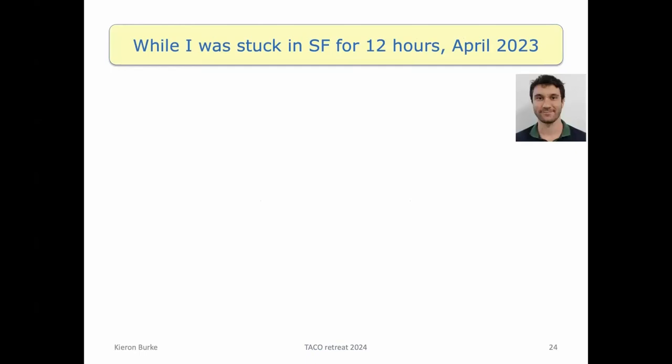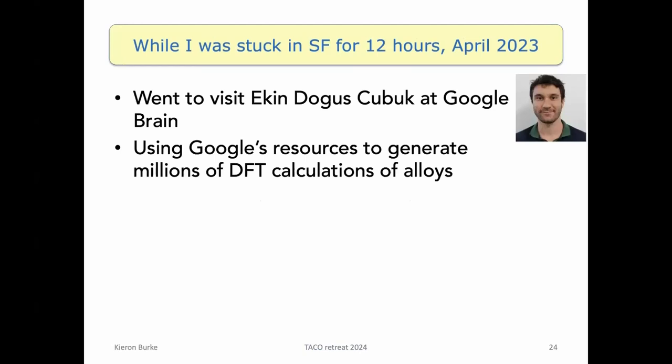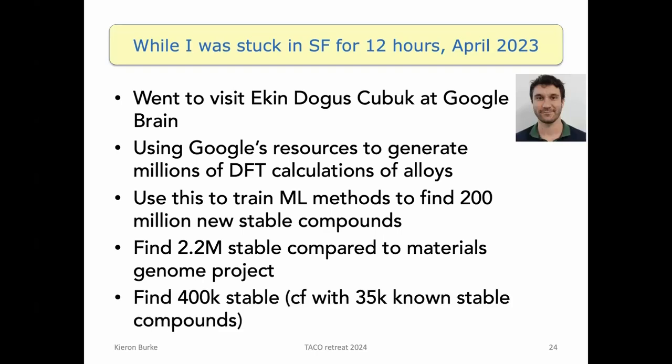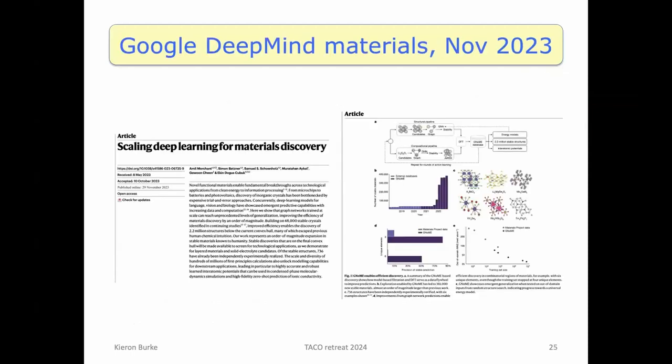Okay, present fast. So I got stuck in San Francisco for 12 hours there in April last year because I was on my way to Korea and suddenly they needed a visa and I didn't realize that. But then I just got the next plane. This young guy, Dosh we call him, is there at Google Brain, and he used Google's resources to generate millions of DFT calculations of alloys and found, you know, 10 times as many stable compounds compared to the 35,000 that were known before.